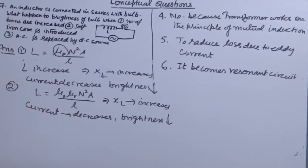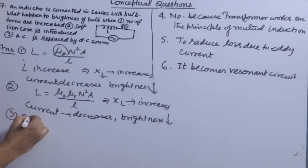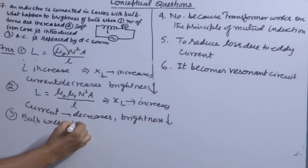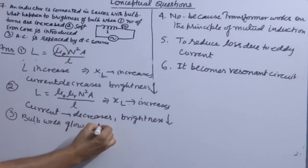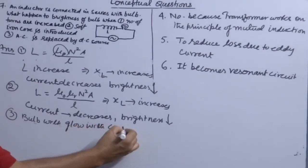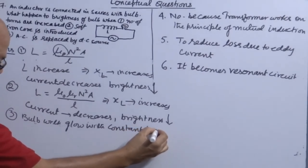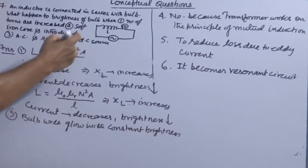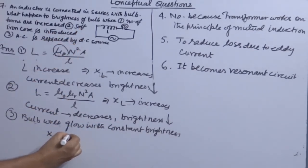If AC is replaced by a DC source, the bulb will glow with constant brightness because XL is equal to zero for DC (ideal inductor offers no inductive reactance to DC).